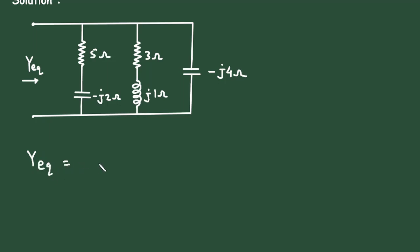So Y_eq is equal to 1 upon 5 minus j2, plus 1 upon 3 plus j1, plus 1 upon minus j4.